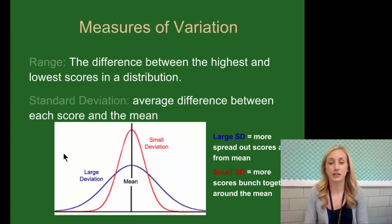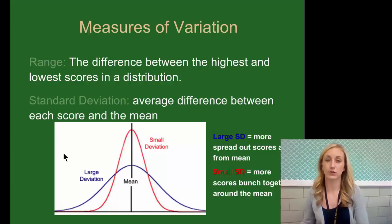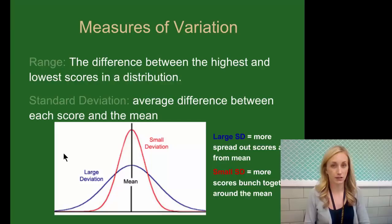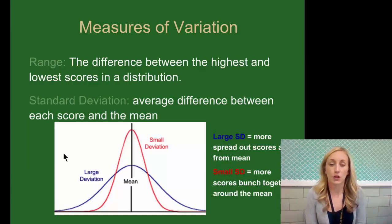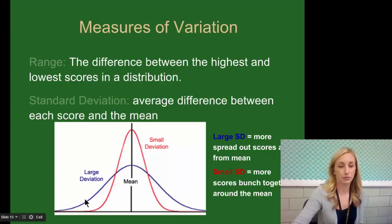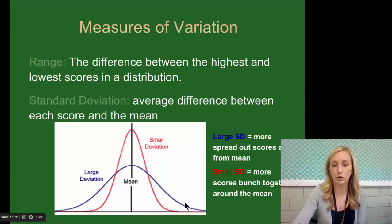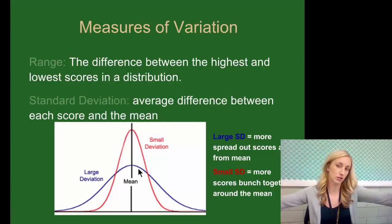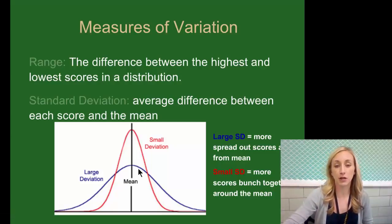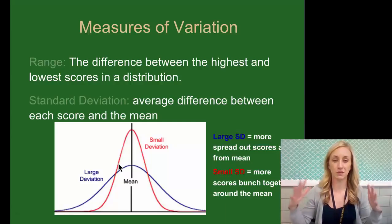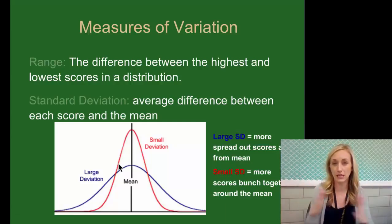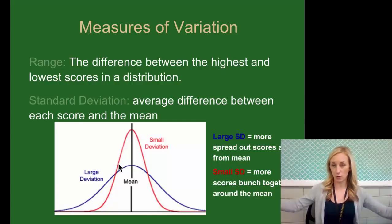Standard deviation is the average difference — the standard or average difference or deviation between each score and the mean. How much of a difference is there on average between the mean and each of the scores? A large standard deviation, shown in the blue distribution on this graph, means scores are more spread out from the mean — not many right in the center. A small standard deviation, shown in red, means more scores are bunched together around the mean with very few scores far from it.